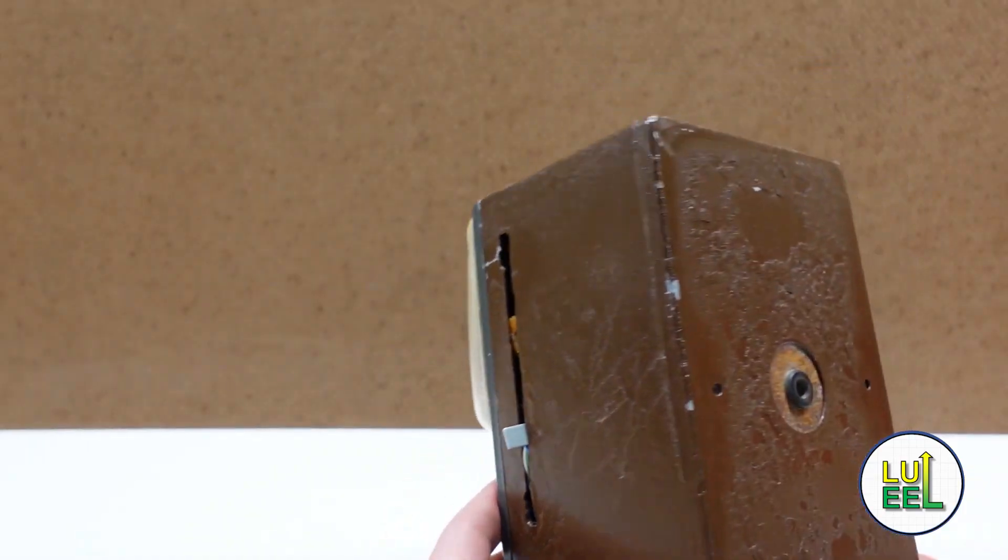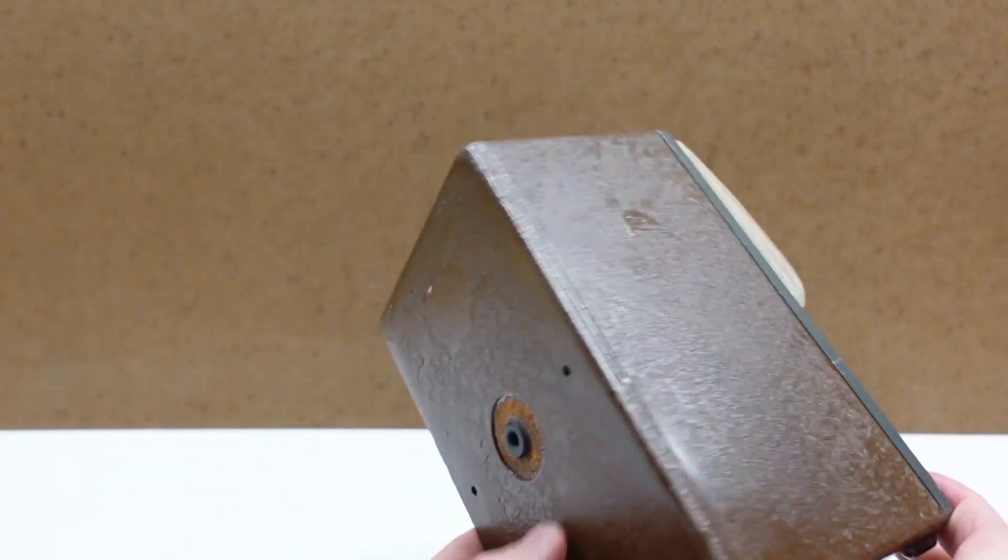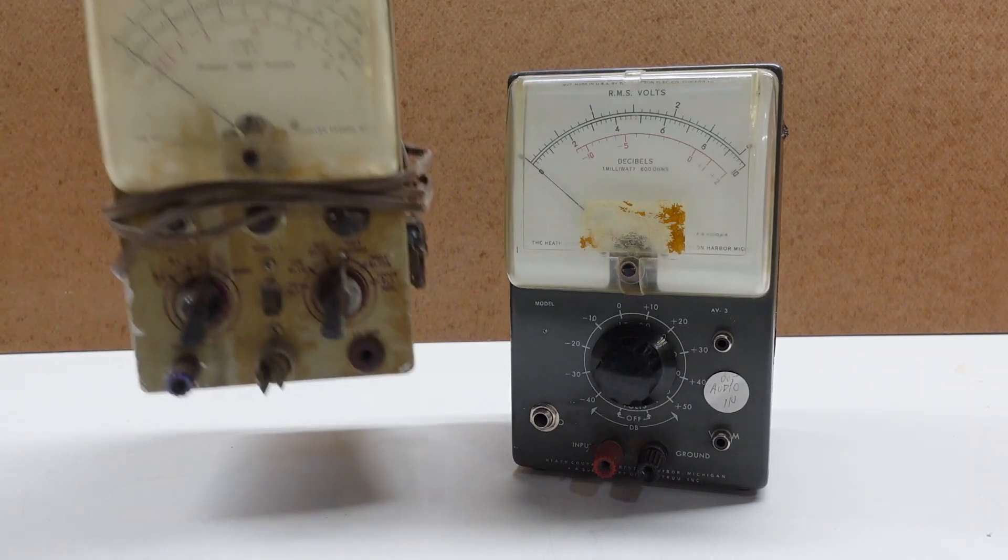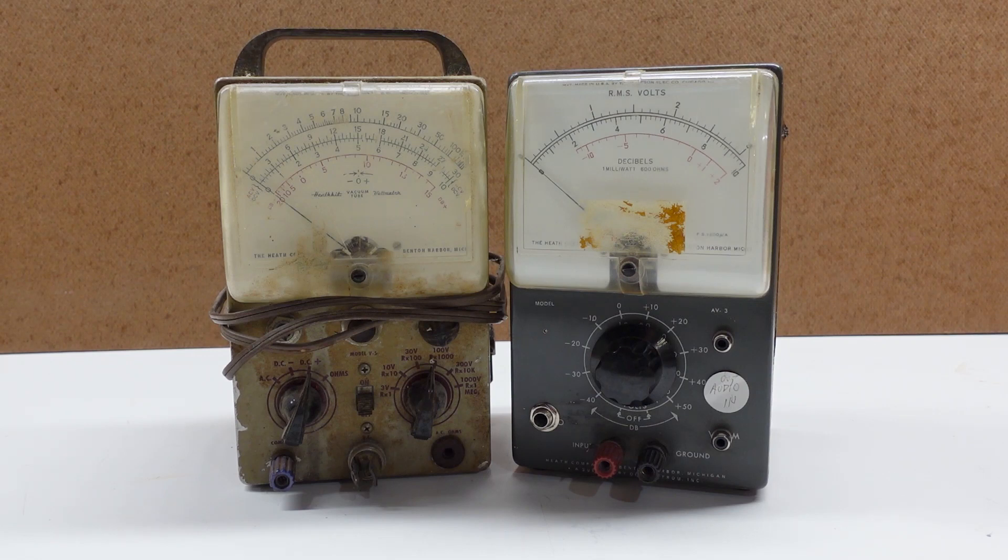I'm going to begin this episode with progress on the cosmetics. Remember that instead of trying to fix that gash and other issues with the AV3 case, I picked up this V5 at Hamvention, which uses a nearly identical case, and that's what I'm going to substitute for the damaged AV3's case.